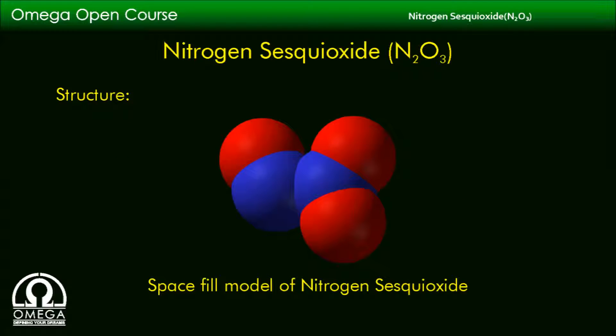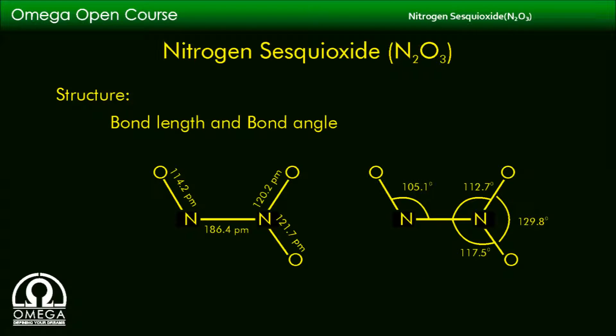Now look at the space-fill model of N2O3. All three N-O bond lengths are different. They are 114.2, 120.2, and 121.7 picometers. The N-N bond length is 186.4 picometers.